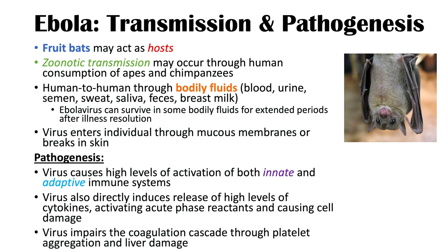Damage to the liver — the site of synthesis of coagulation factors 3, 7, 9, and 10 — combined with platelet aggregation leads to decreased clotting. This is why Ebola leads to hemorrhaging: individuals unable to properly form fibrin clots experience significant bleeding issues.